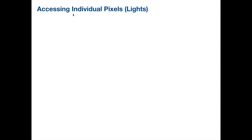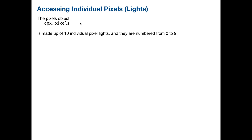Now let's access the individual pixels — the individual lights. Previously we used cpx.pixels with the dot fill method to fill all the pixels with an RGB value. The different pixels on a CPX — there are 10 of them — are numbered from zero to nine. Starting a numbering system at zero is really common in most programming languages, and it's referred to as zero indexing.